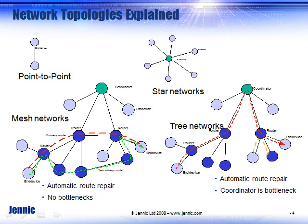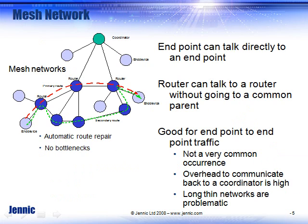Network topologies: the basic ones are point-to-point and star network. Both point-to-point and star can be done with a 15.4 stack. If you want something more intricate, such as mesh networks or tree networks, you would need a more advanced software stack. Both ZigBee Pro and GenNet can do a tree network, star, or point-to-point. ZigBee Pro is also mesh. GenNet is tree only.